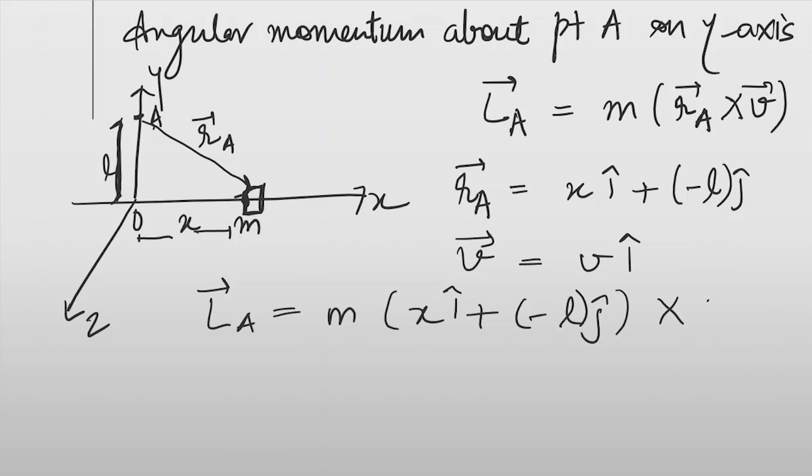We will get minus L j cap into v i cap. So x i cap cross v i cap minus L j cap cross v i cap. This first term will be zero, and this will be minus M L j cap cross i cap.